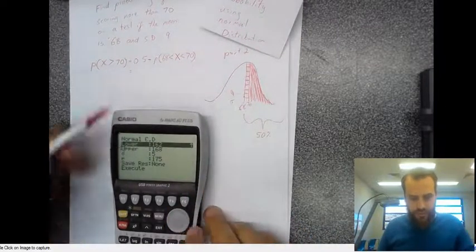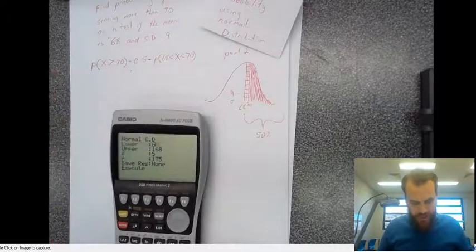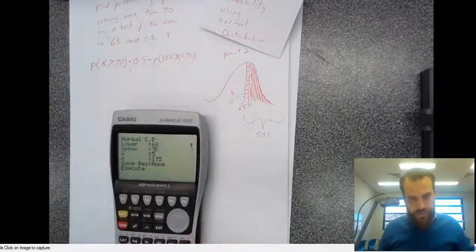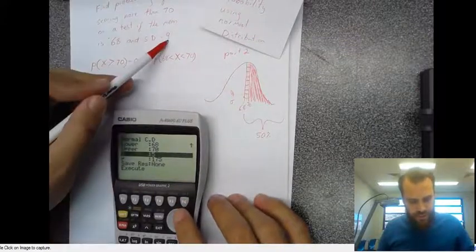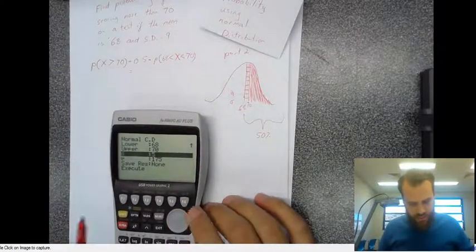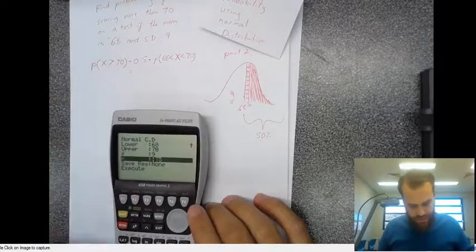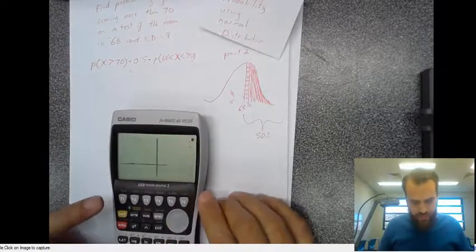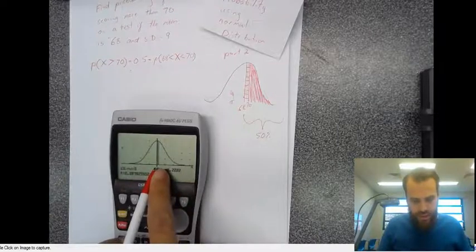Let's try it on the calculator. Lower bound: I'm going to find this number — 68. Upper bound: 70. Standard deviation: 9. Mean: 68. You can see it's drawn out a little section in here.